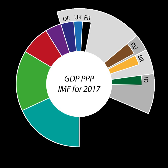Surveys such as the International Comparison Program include both tradable and non-tradable goods in an attempt to estimate a representative basket of all goods. The first table includes estimates for the year 2017 for all current 191 International Monetary Fund members as well as Hong Kong and Taiwan. Data are in millions of international dollars, calculated by the IMF. Figures were published in April 2018.